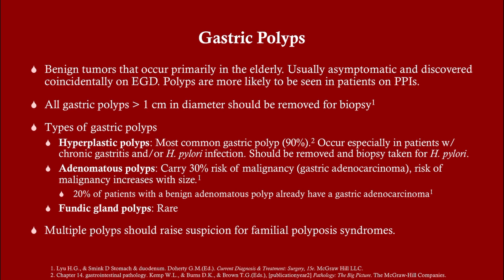Gastric polyps also tend to happen more in patients who are on proton pump inhibitors. We don't really know why, but I suspect we may just see more polyps in people on PPIs because those patients tend to have reflux disease or possibly ulcers, and we do EGDs or upper endoscopy on those patients more frequently than we would on asymptomatic patients — unlike with colonoscopy, where we screen asymptomatic patients all the time.